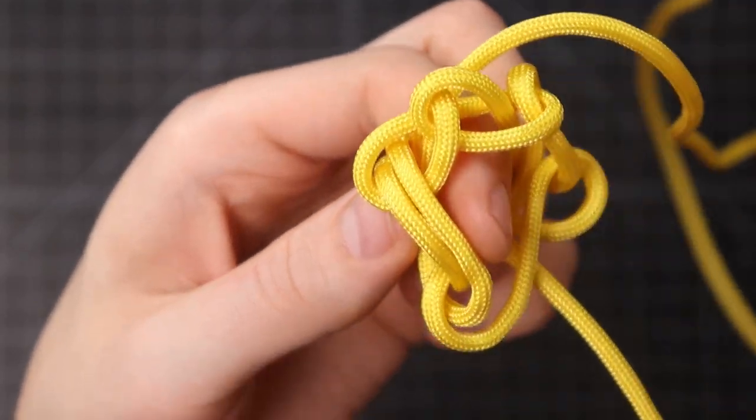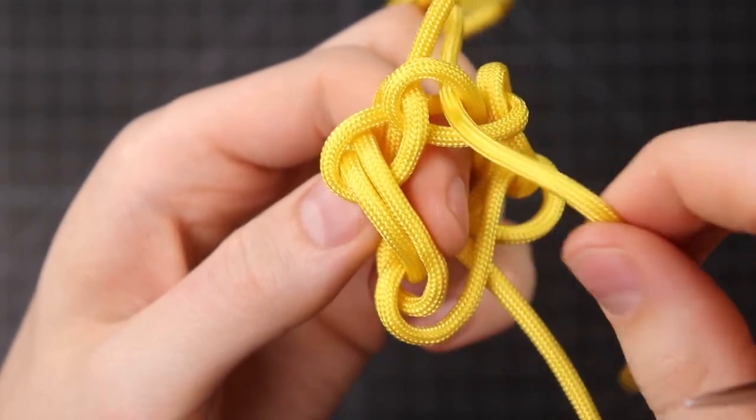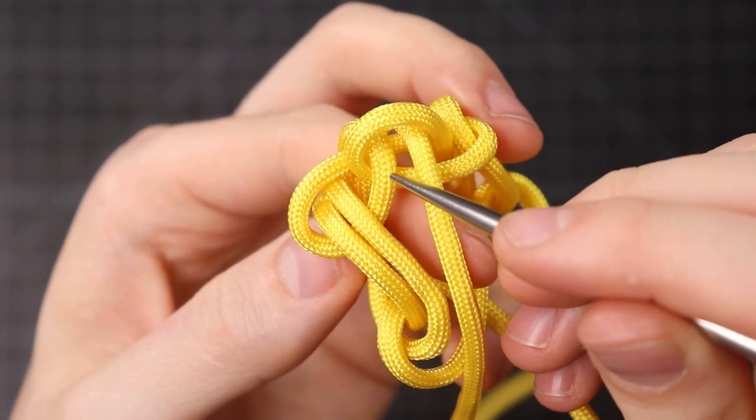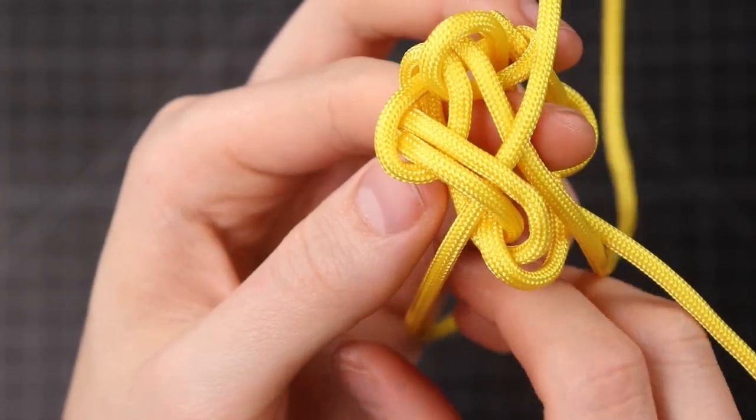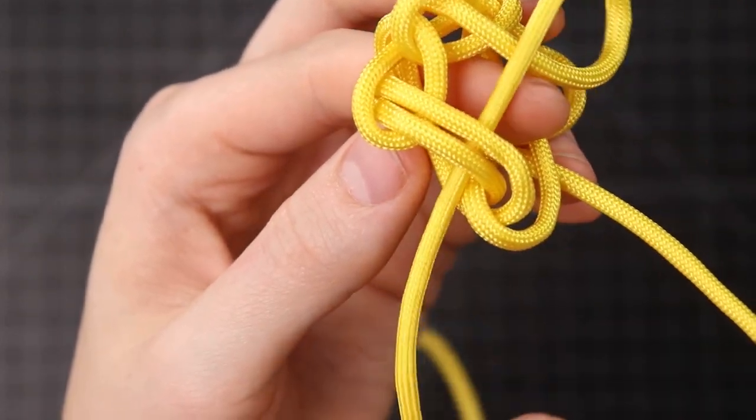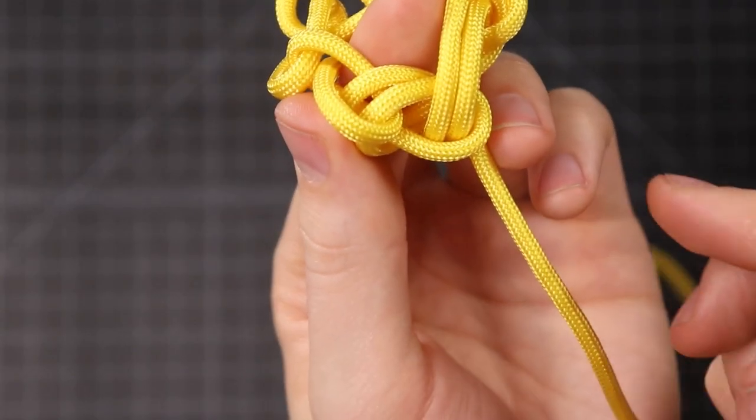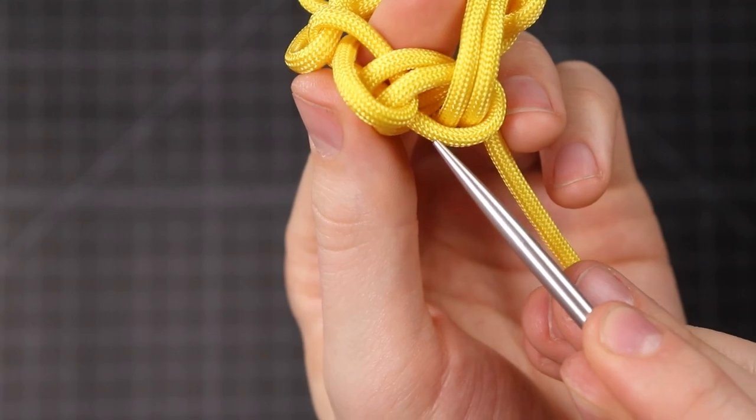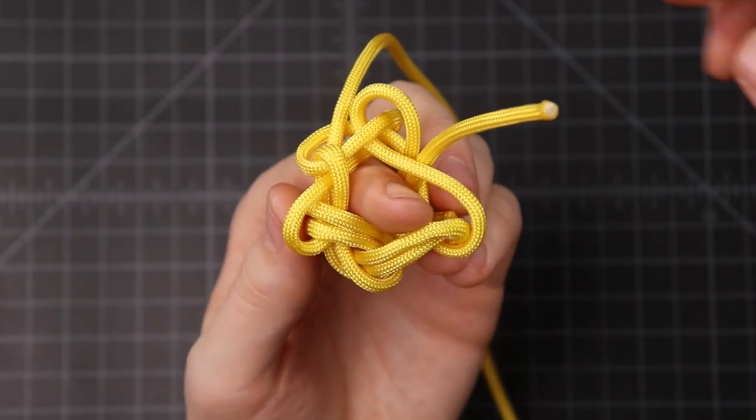And then we're pretty much going to repeat that pattern again. Okay, that's going to come up through this hole. We're following alongside the right of this cord, going down through this loop. And as we bring it around, we want to go through that loop first, so that we're still following the right side of this cord. Bring that all the way through.